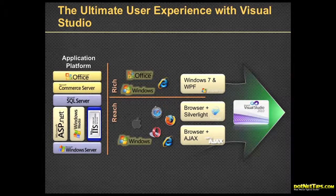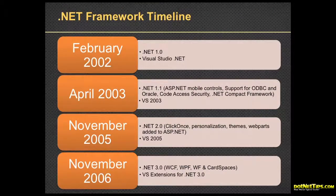The .NET framework timeline: in February 2002, .NET 1.0 came out. I was using it live in production with real customers in beta 1 of .NET — that's how good it was even back then. Visual Studio .NET came in April 2003 with version 1.1, which wasn't a huge change, but we got the new security method we still use in .NET today, along with the Compact Framework for older mobile platforms and handheld devices.